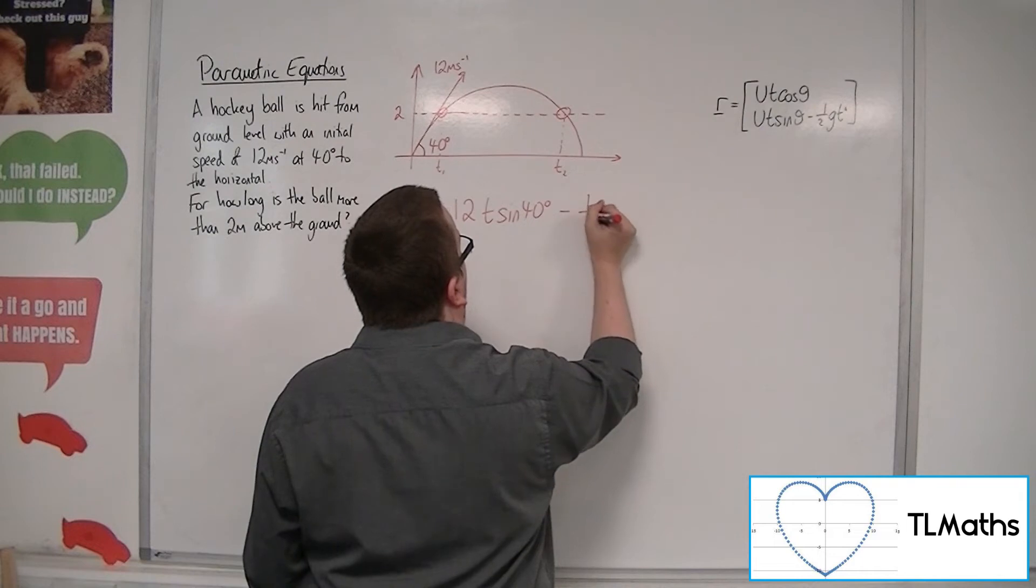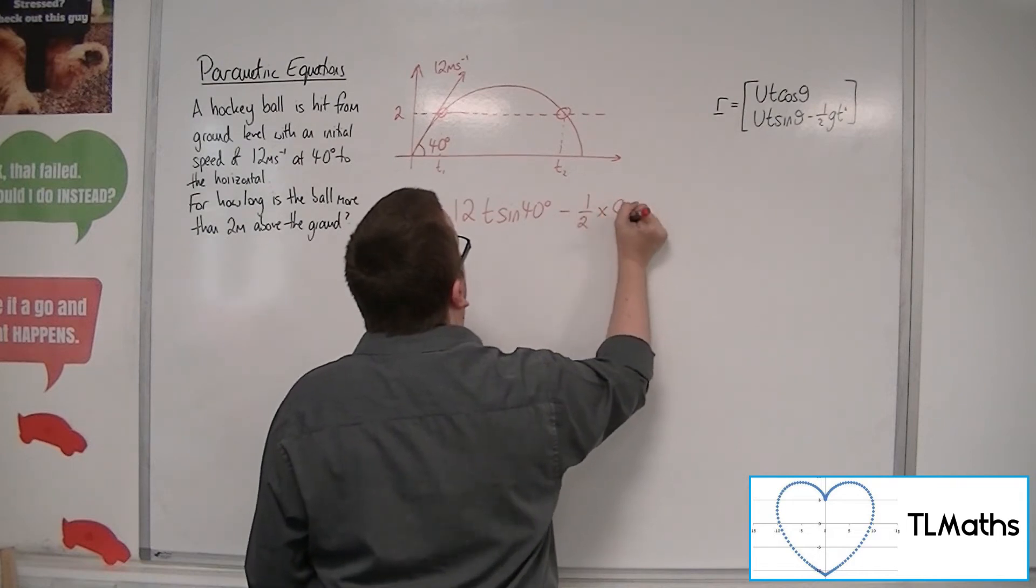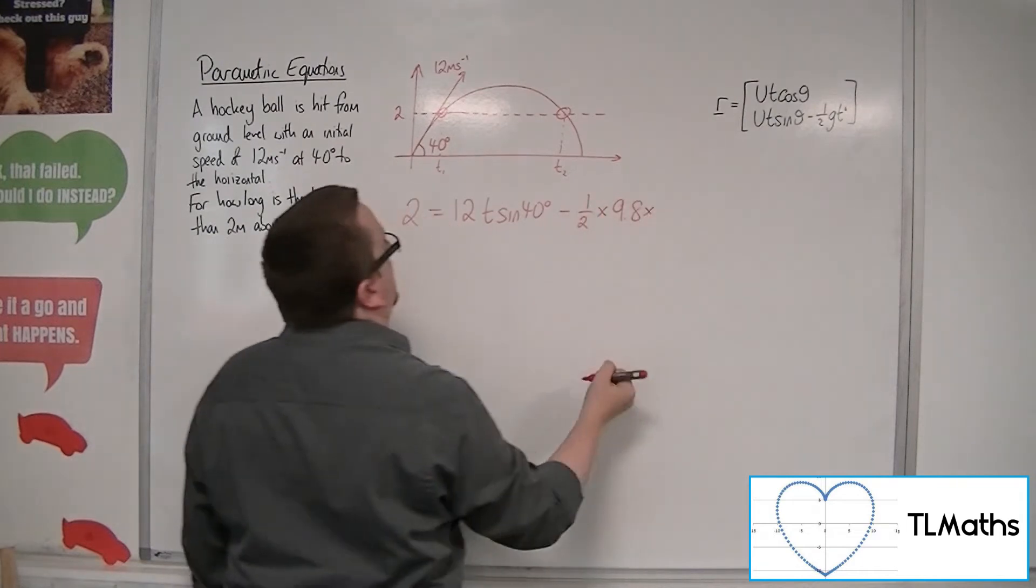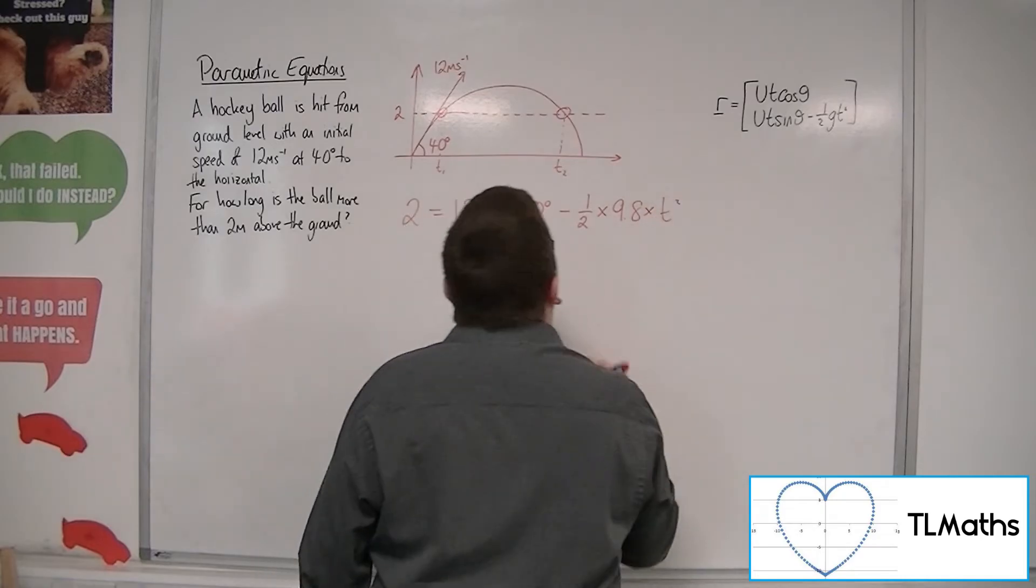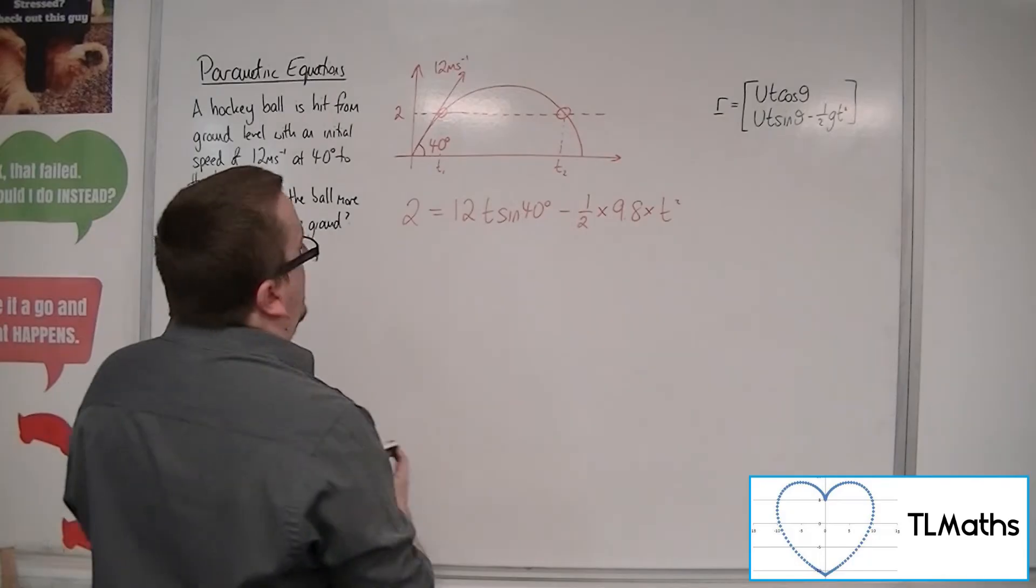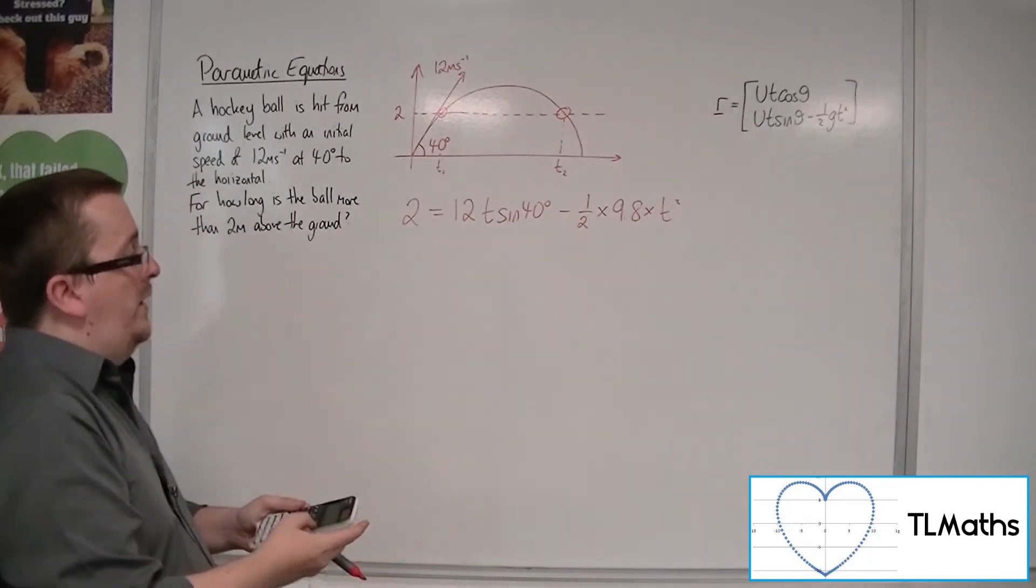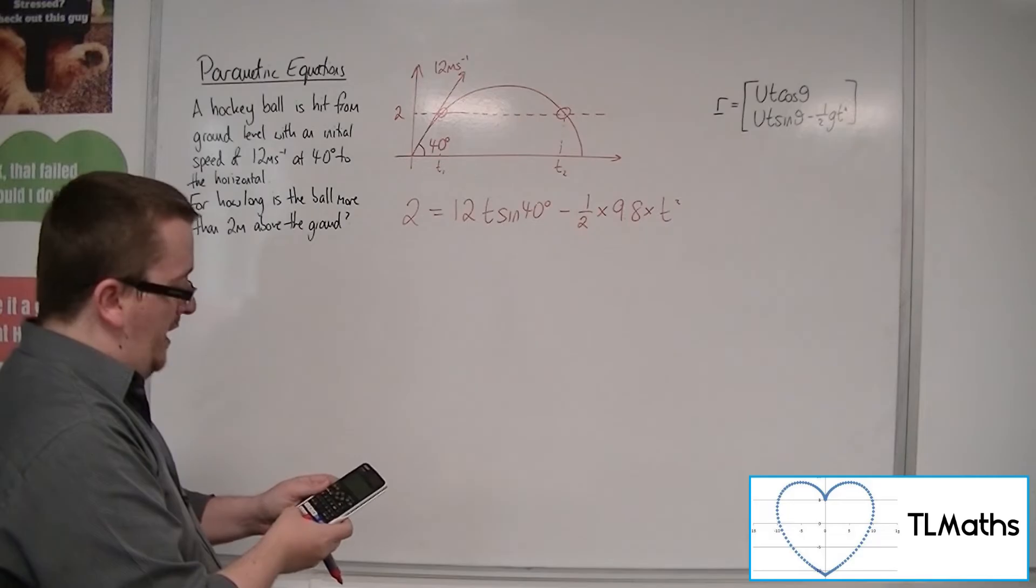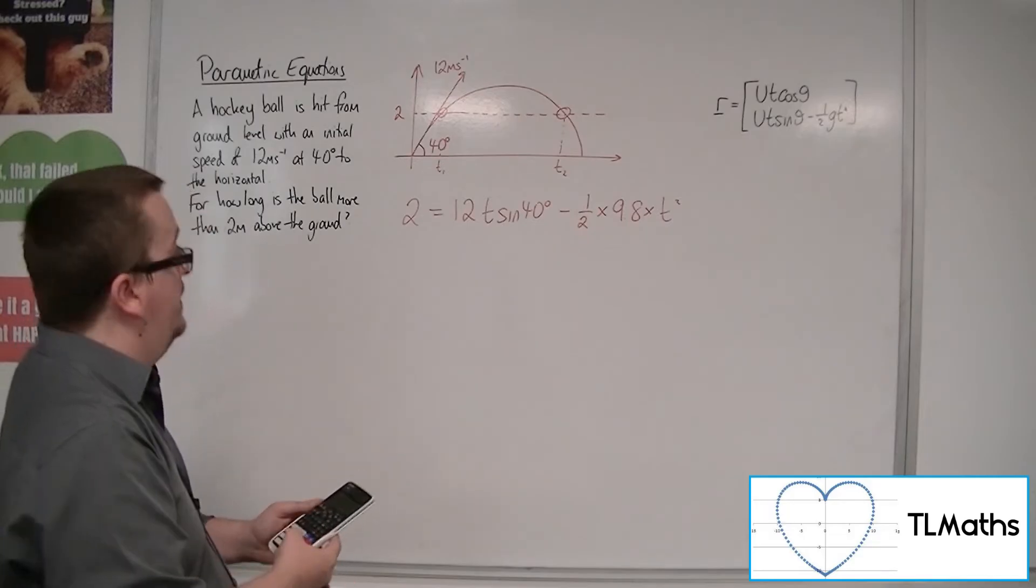Take away 1 half, we'll take g to be 9.8, times t squared. So this is the situation that we have. Now we probably want to tidy this up. So also making sure your calculator is in degrees when you do this.